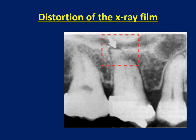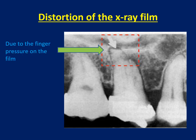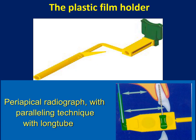When the patient holds the film, sometimes they push the film too much and distort it. This will make the palatal root of the upper six appear very long and the buccal roots very short. It is important to correct this. A better way is by using the plastic film holder, whereby the film is always parallel to the tooth — this is what we call the paralleling technique.